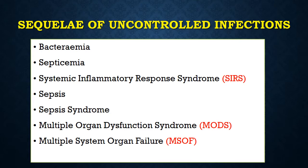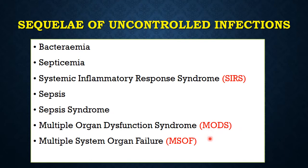What are the sequelae of uncontrolled infections? First, bacteremia — presence of living bacteria in the blood or circulation. Then septicemia — production of septic chemicals and toxins by these bacteria, which circulate in the blood. This is followed by systemic inflammatory response syndrome (SIRS), then sepsis, then sepsis syndrome, multiple organ dysfunction syndrome (MODS), and finally multiple system organ failure (MSOF). Generally, the severity is increasing as we go down this list.